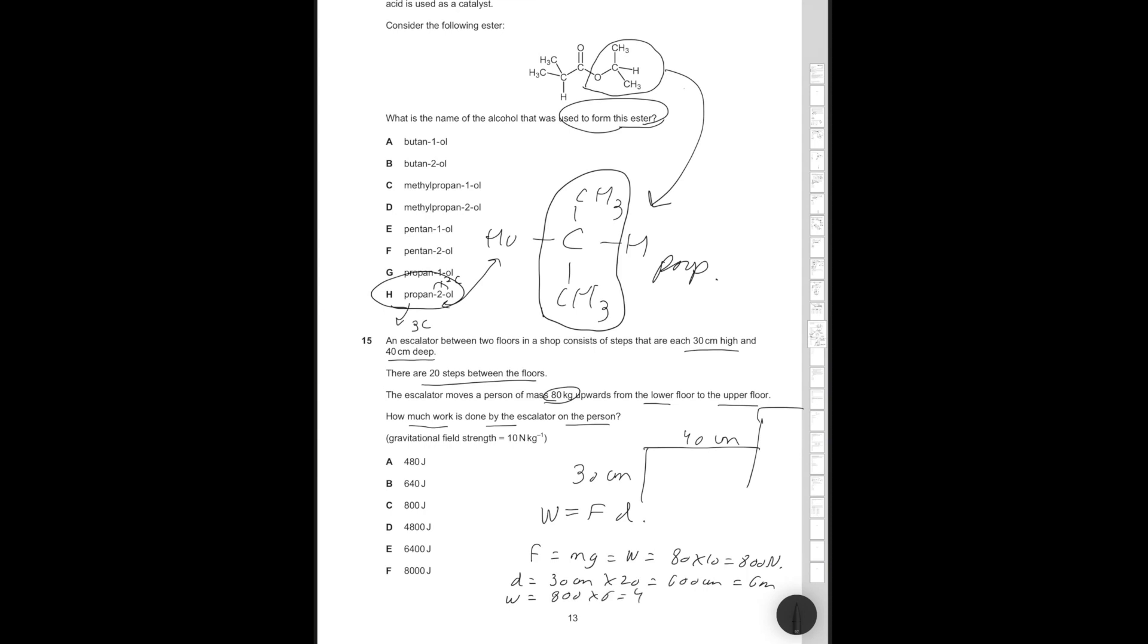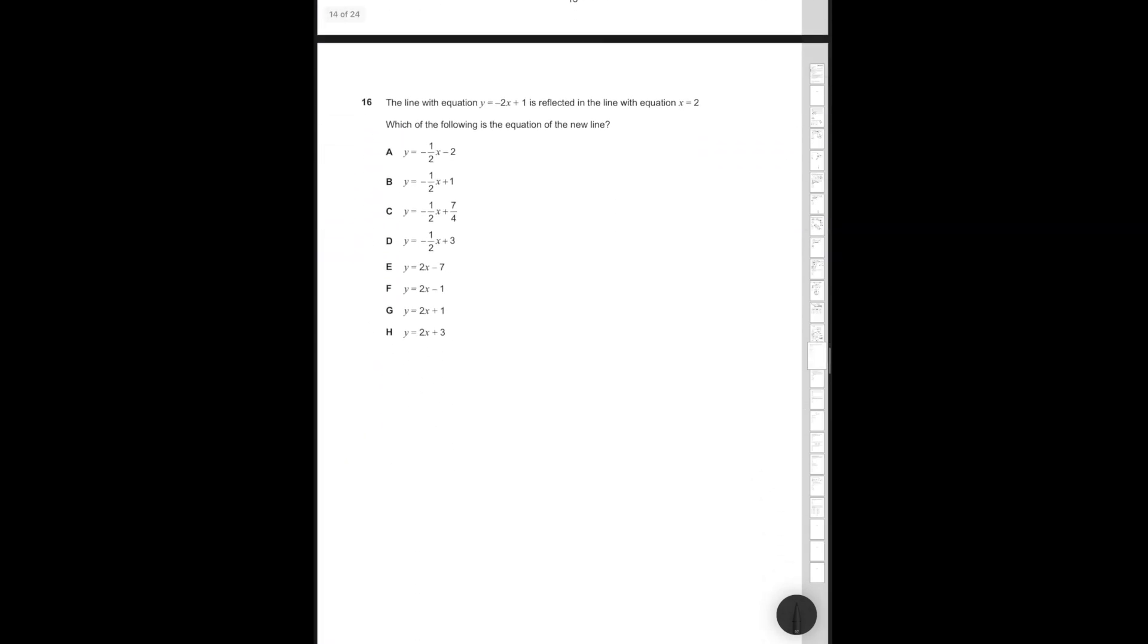Therefore, work is going to be 800 times 6 is equal to 4,800 joules. Therefore, the correct answer option is going to be answer option D. I drew a diagram of the steps. It's giving you the depth of each escalator step as a distractor because this length is not relevant. Then I wrote out the two key equations I need to use. I used the information given to find F. I used simple math to find the distance moved, the vertical distance moved. And remember, you have to work in standard units. So I worked in meters. And then I just said that work done is going to be the product of the force and the distance, which is 4,800 joules.